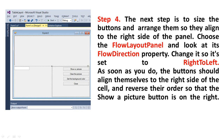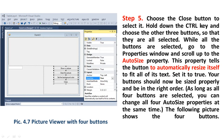Step 4: The next step is to size the buttons and arrange them so they align to the right side of the panel. Step 5: Choose the flow layout panel and look at its Flow Direction property. Change it so it is set to Right to Left. As soon as you do, the buttons should align themselves to the right side of the cell and reverse their order so that the Show a Picture button is on the right.